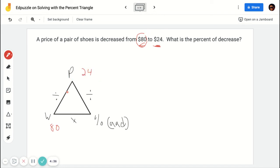So using the triangle. And I know that's the part because it went from here to here. And I'm going to do 24 divided by 80, which is going to give me the answer of 0.3. But remember, that is the percent as a decimal.